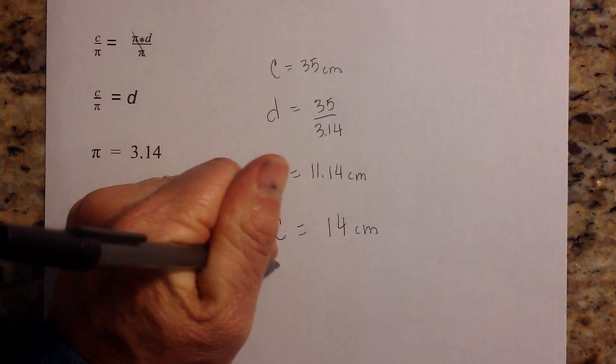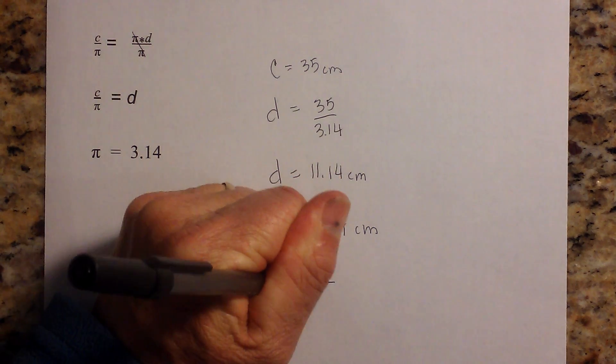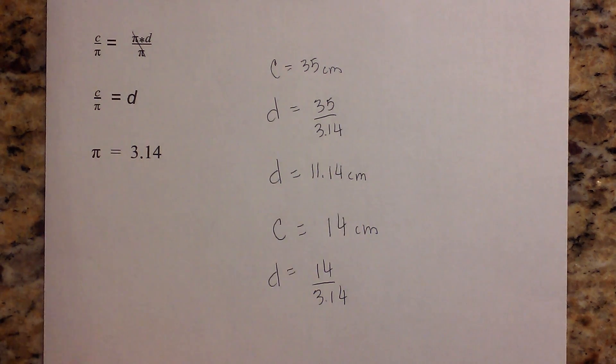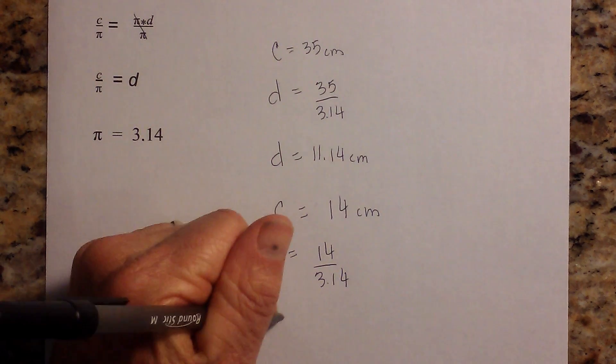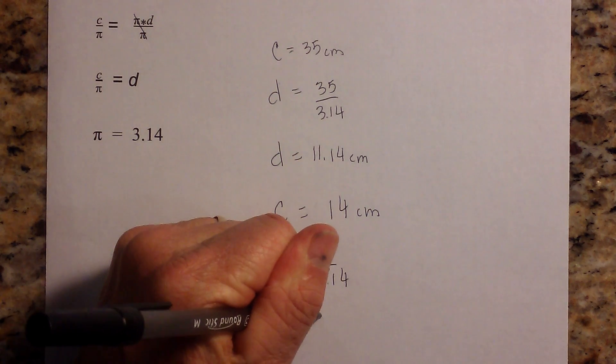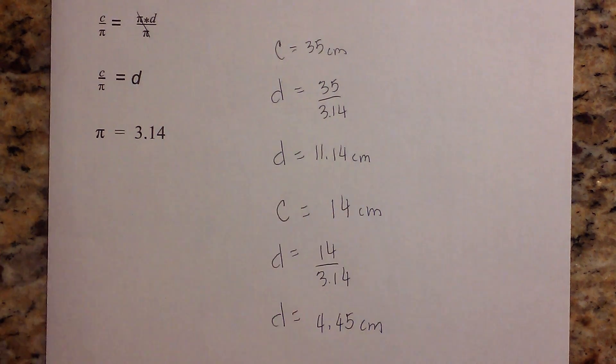So now in order to get the diameter, diameter is equal to 14 divided by 3.14, and then when you divide 14 by 3.14, the diameter is equal to 4.45 centimeters, and I would probably round that to 4.5 centimeters.